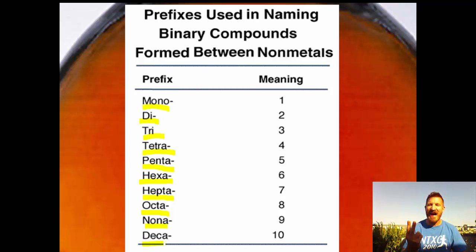So mono, di, tri, tetra, penta, hexa, hepta, octa, nona, deca. So there you have the 10 prefixes that we want to use. Now, let's see if you remember: when's the only time you don't use a prefix when you're naming two non-metals? Hopefully you remembered it's when you have one of the first elements.